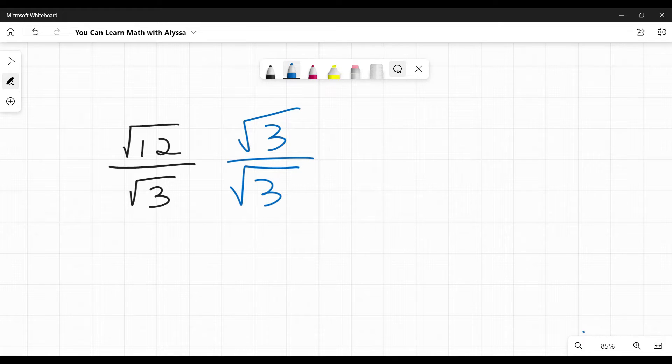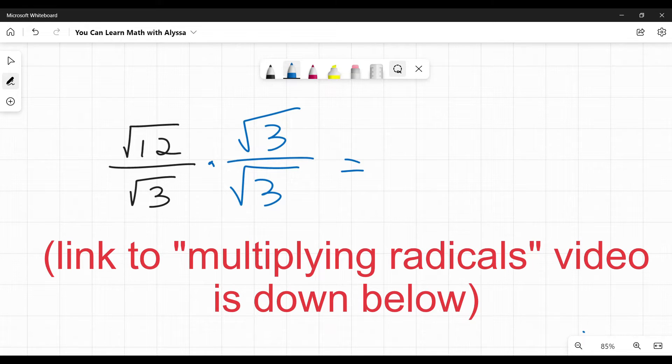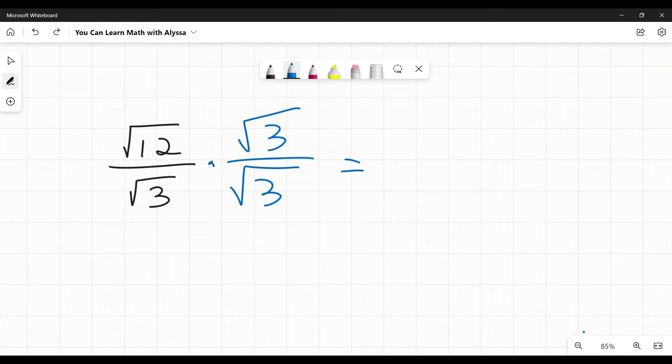Now I mentioned multiplying radicals, and this is why if you haven't done multiplying radicals yet, this part is going to look a little strange. On top, we have square root of 12 times square root of three, which is the same as the square root of 12 times 3. And on the bottom, square root of three times square root of three just gives us three. Multiplying the square root of something by the square root of that same number just gets rid of the square root and we are left with three.